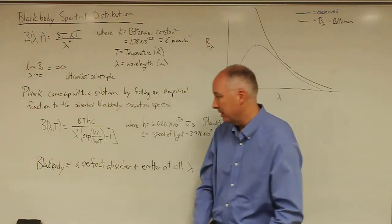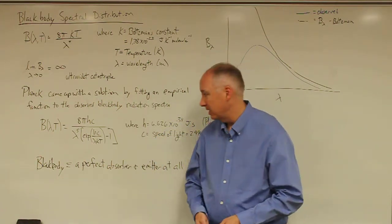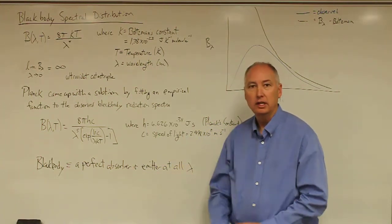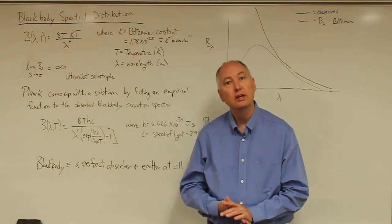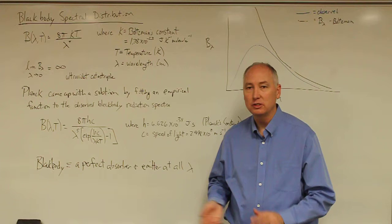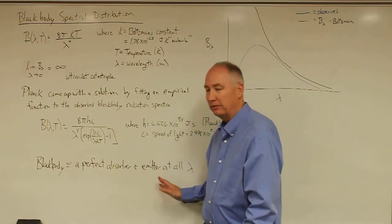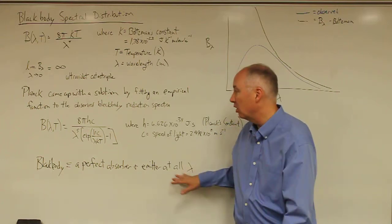What do I mean by a blackbody? A blackbody is a theoretical object that is a perfect absorber and a perfect emitter at all wavelengths. There is no such object as a blackbody in the universe that we know of, so we refer to most things as greybodies, which means that they're not perfect absorbers or perfect emitters at all wavelengths. They may be perfect at individual wavelengths, but not at all wavelengths.